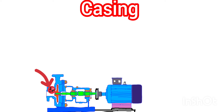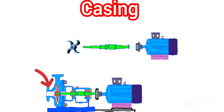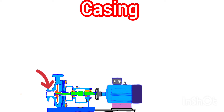Next is the casing. The casing is the main body — we can say it is the stomach or the internal structure of the centrifugal pump. The casing houses the impeller inside it. One part of the casing is connected to the suction nozzle and another part to the discharge nozzle. All the pumping process happens inside the casing. The casing also has two to three types, but we will not discuss those in this video.